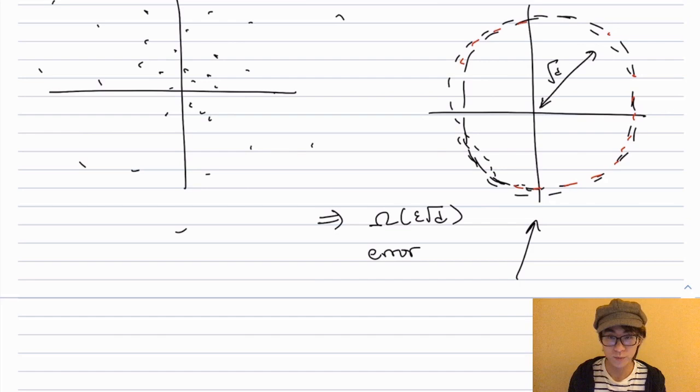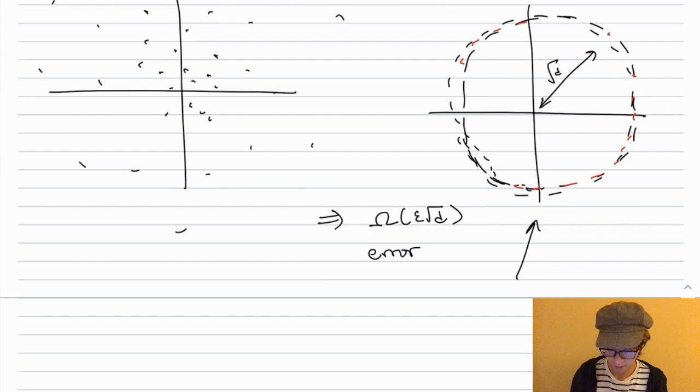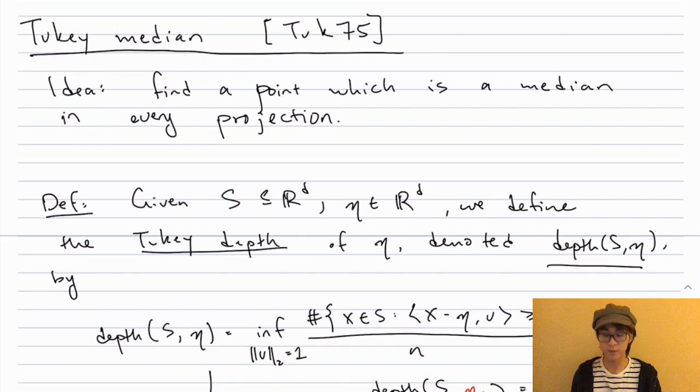In the remainder of this lecture, I will give two estimators which are able to get past this ε√d barrier and in fact get the right answer. However, they are more sophisticated, and they will pay for their sophistication very concretely in their computational complexity. In following lectures we'll also get around that issue, but this will require much more additional work.